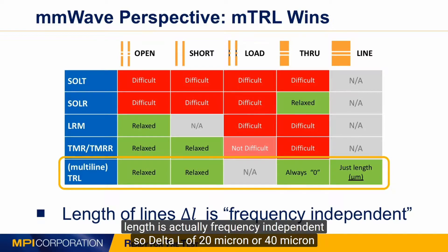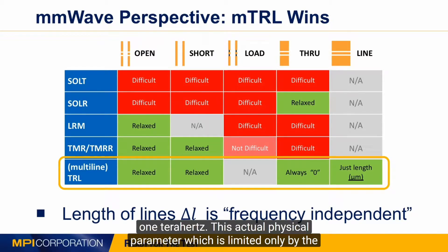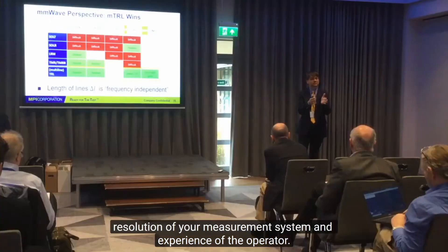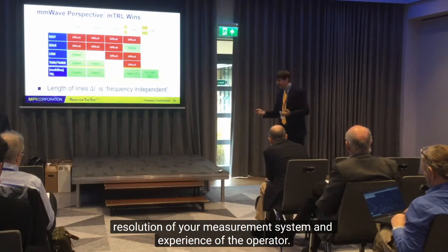A delta-L of 20 microns or 40 microns is the same 40 microns — it doesn't matter whether it's 20 gigahertz or one terahertz. It is a physical parameter limited only by the resolution of the measurement system and the experience of the operator.